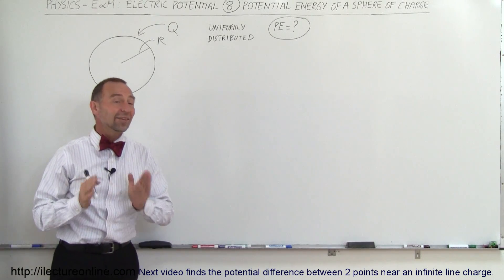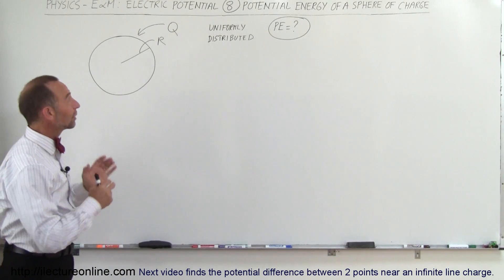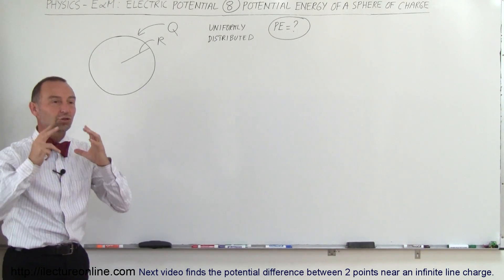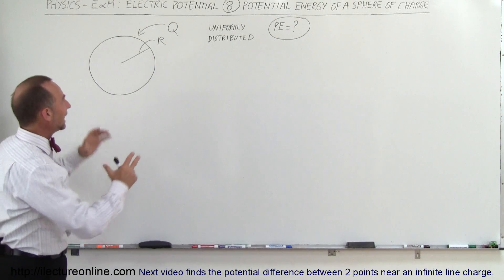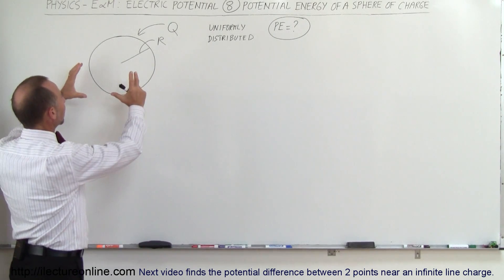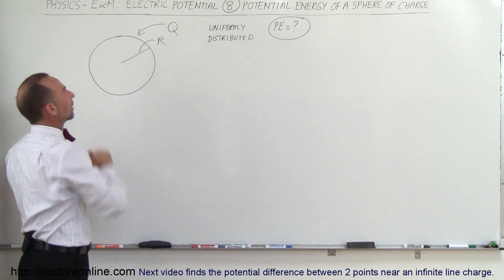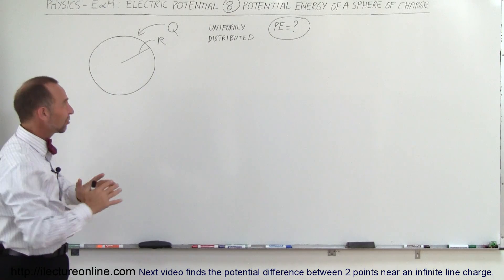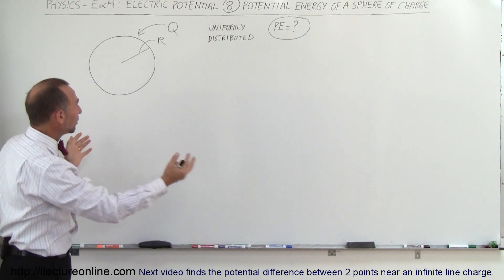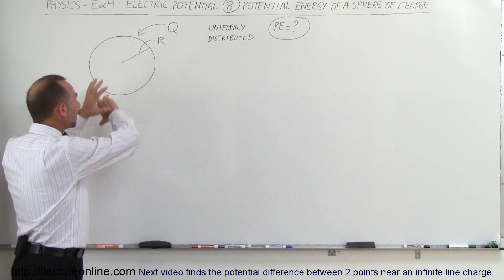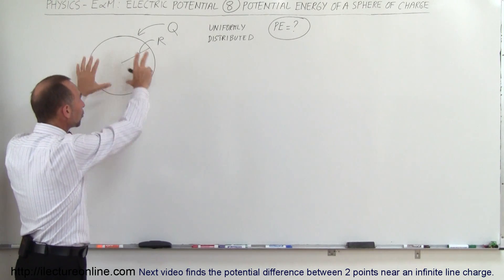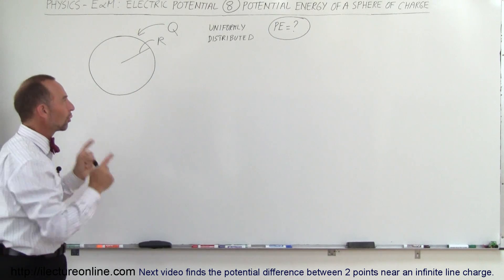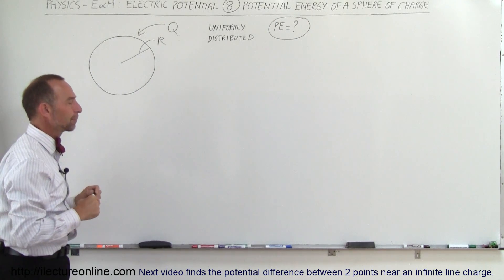Welcome to our lecture. In this example we're going to calculate the total amount of energy stored in a sphere that contains Q amount of charge. Assuming that it's not a conductor — it's like an insulator — and we put charge evenly distributed throughout the sphere, what would be the total energy stored in that sphere?